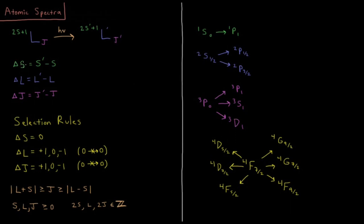So our delta s during this transition is going to be s prime minus s, delta l the change in l is going to be l prime minus l, delta j is going to be the change in j, j prime minus j. So what are our selection rules for these atomic transitions?